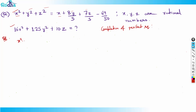So I'll write: x² − x + y² − 8y/5 + z² − 7z/5 = −69/50. Now I'll complete the perfect squares for each group of terms.